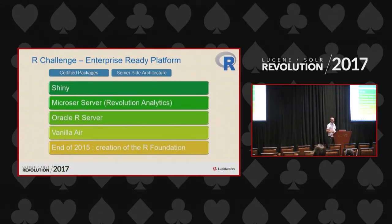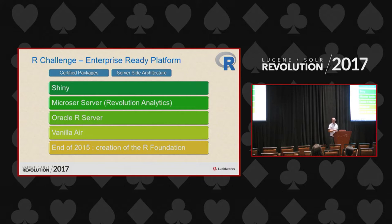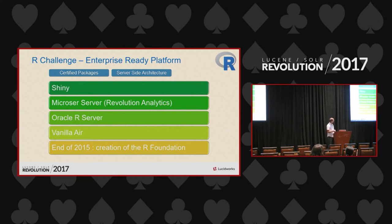To face enterprise challenges there are ready platforms: like Lucidworks with Solr, there is Shiny, Microsoft built Revolution Analytics now called Microsoft R Server, Oracle R Server, and our Vanilla. About two years ago there was also the creation of the R Foundation to help lead R development and regulate contributions, so everybody goes in the same direction.